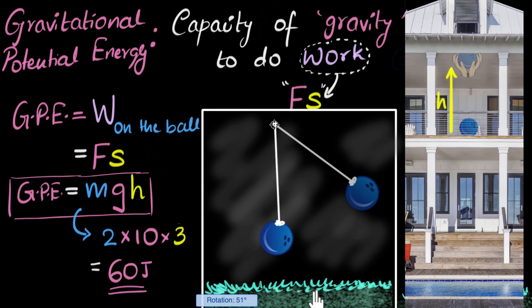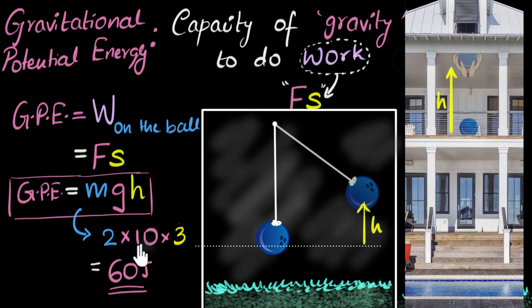After that, the ball will go again, go up there, right? So in this case, it'll just make sense to say this as our ground level and this as the height to calculate the potential energy of the ball at this point.